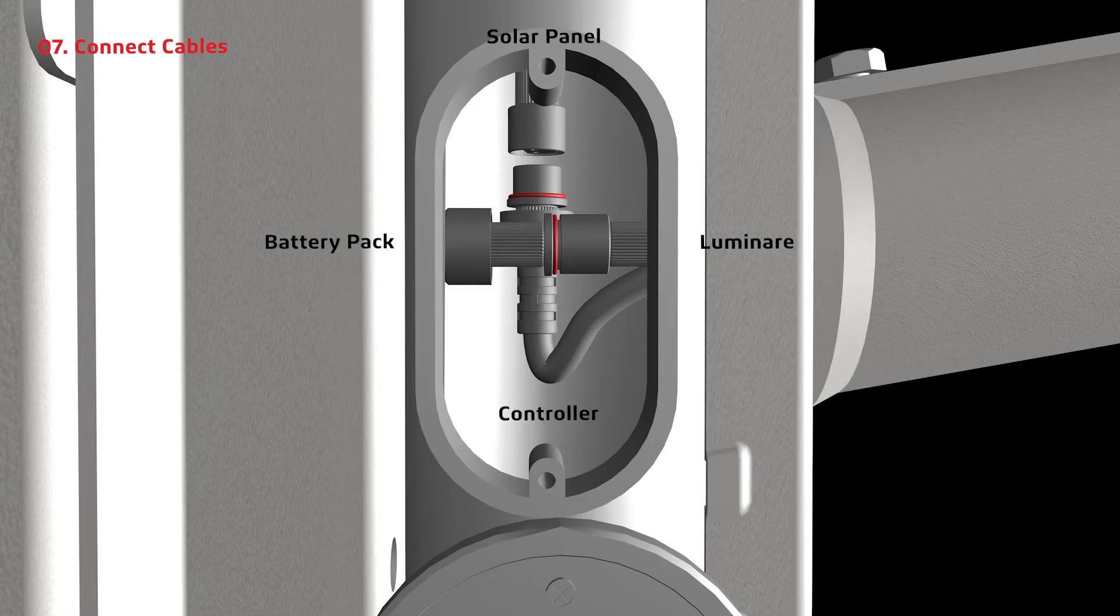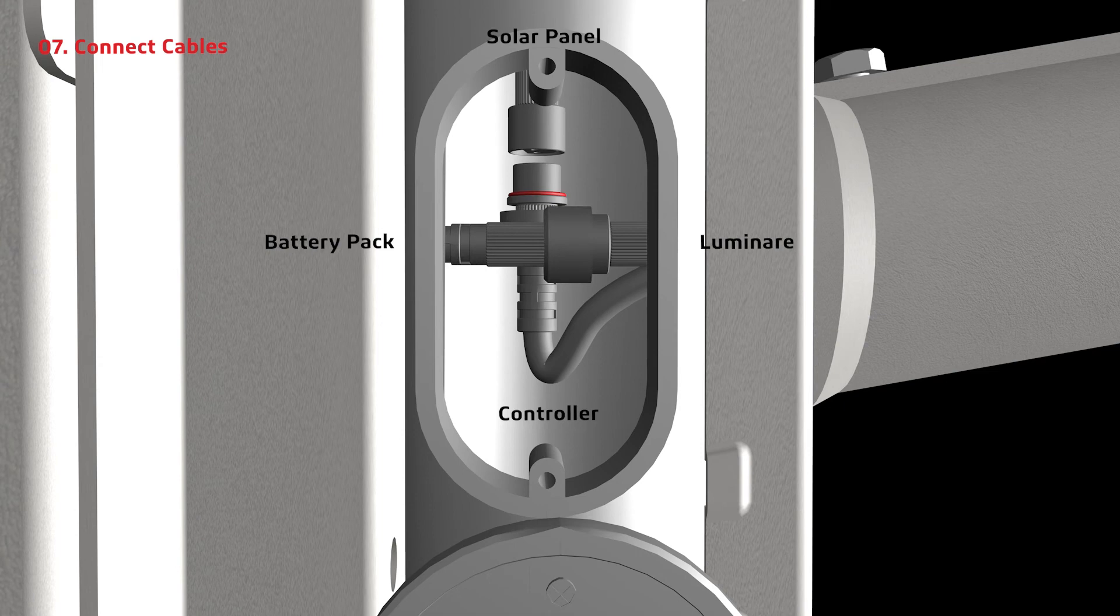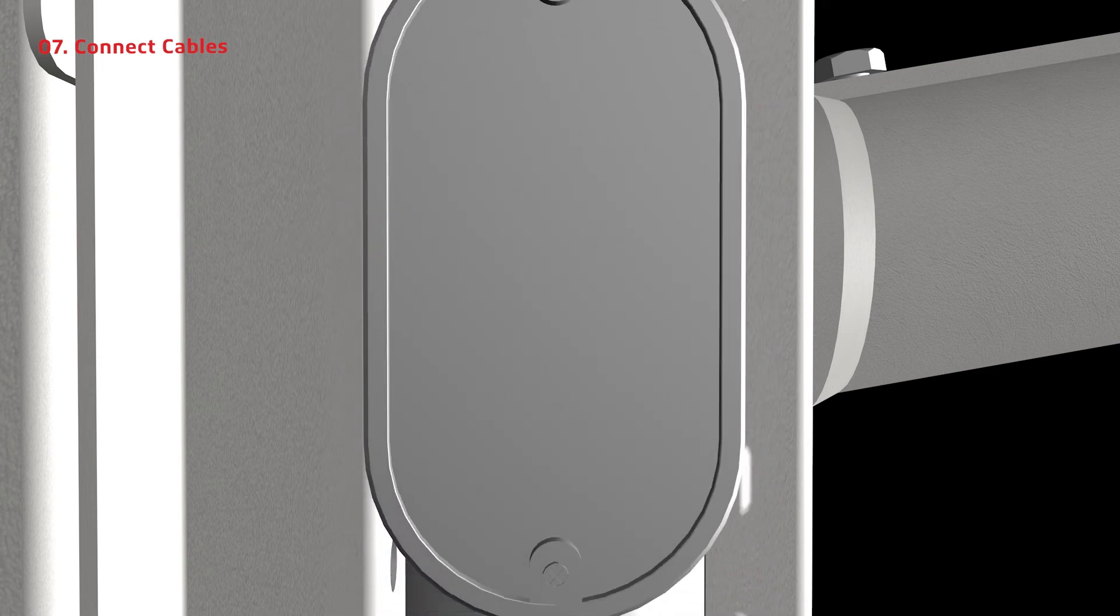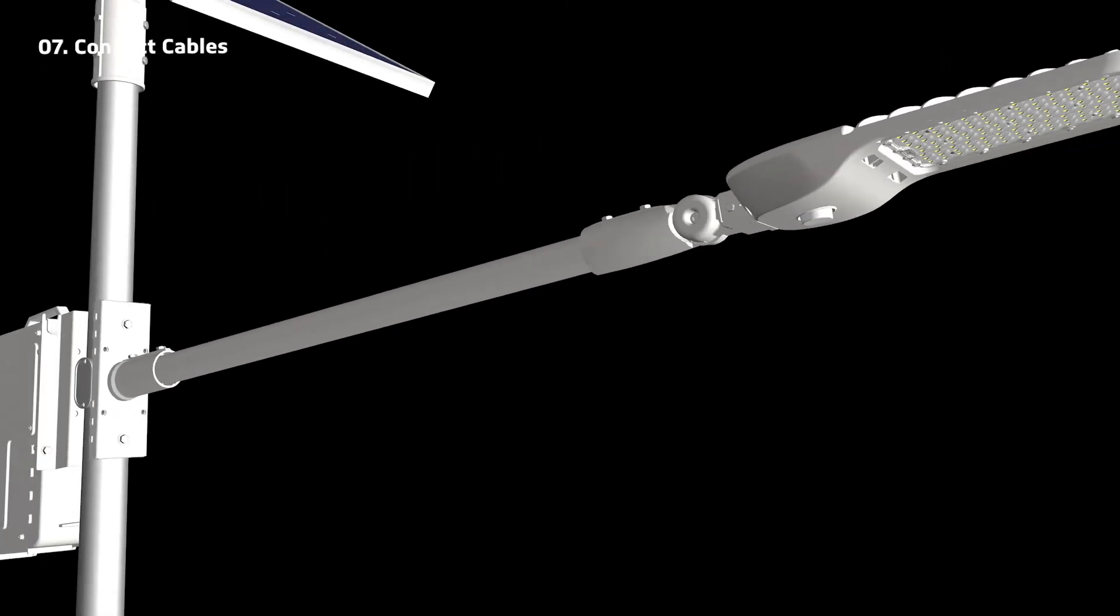Connect all of the cables through the extra hand hole. Battery pack to the luminaire and the controller to the solar panel. Keep the extra hand hole covered so the cables are unharmed.